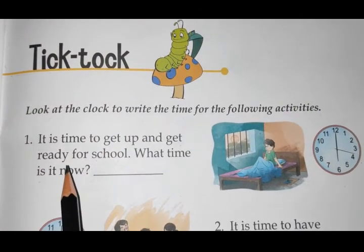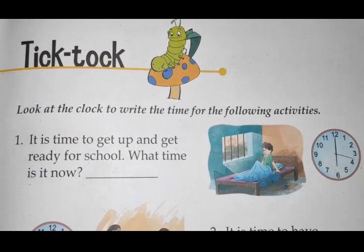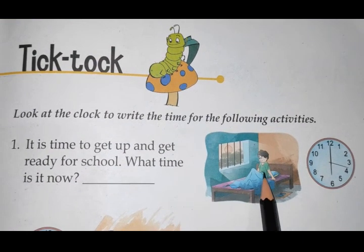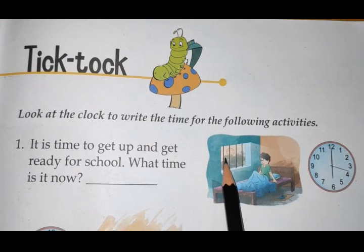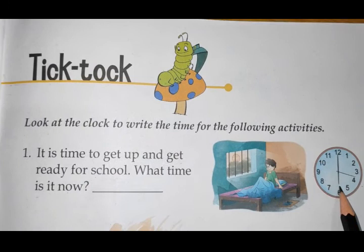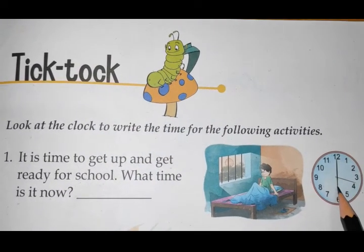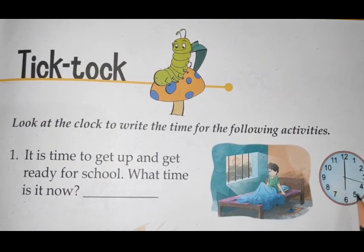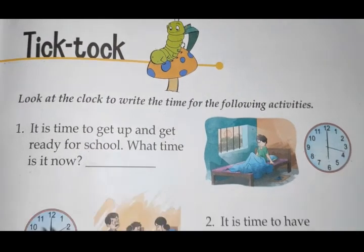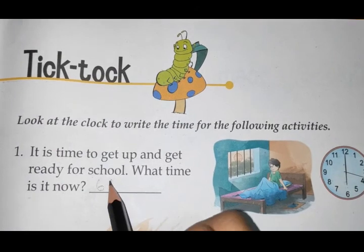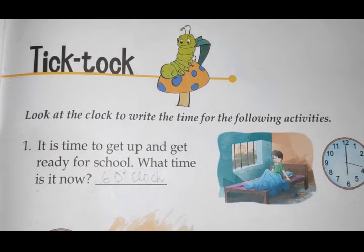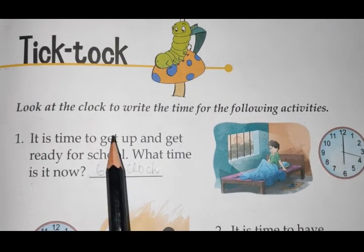First, it is time to get ready for school. What time is it now? When do you get ready for school? Obviously, in the morning. Here you can see this child is waking up, the sun has already come up in the sky, and this clock is showing the time 6 o'clock. The hour hand — the small hand — is at 6, and the minute hand is at 12. So this clock is representing 6 o'clock. You have to write it here: 6 o'clock. It is the time to get up and get ready for school.